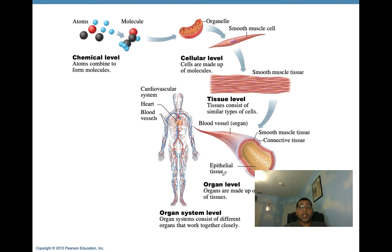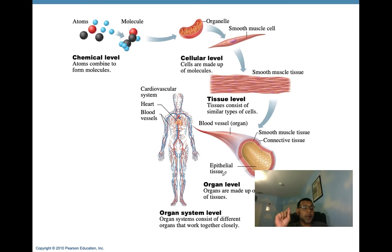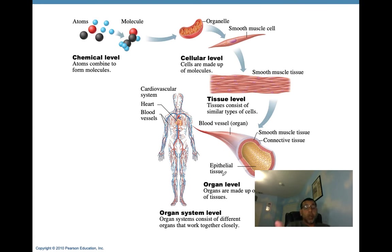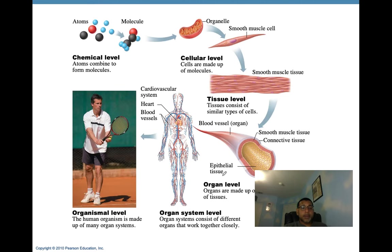Moving from the organ level to the organ system level, various organs come together to give rise to organ systems. Organ system level is where organs work together to accomplish a common purpose, representing the sum of all structural levels working together. Moving further, you reach the organismal level, where all organ systems work together.